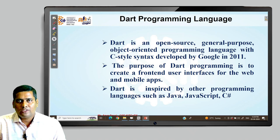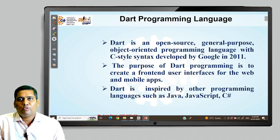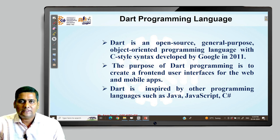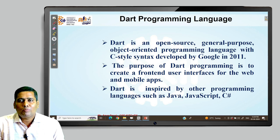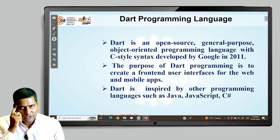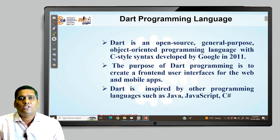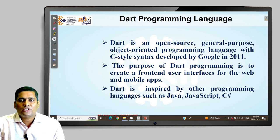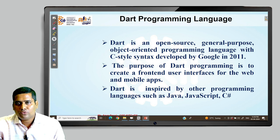Dart programming language is open source and a general purpose language with object oriented programming ability. It uses C-style syntax and was developed by Google in 2011. The purpose of Dart is to create front end user interfaces for web and mobile applications. Dart is inspired by Java, JavaScript, and C#, and is used for cross-platform development with Flutter.